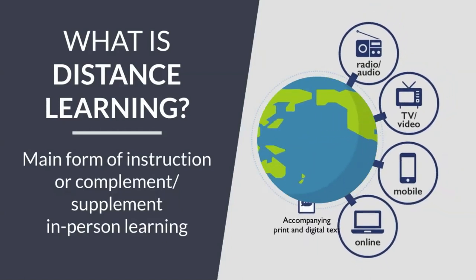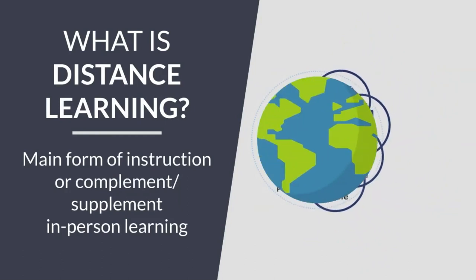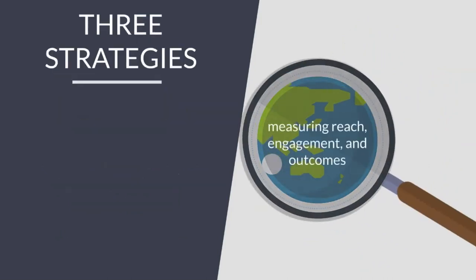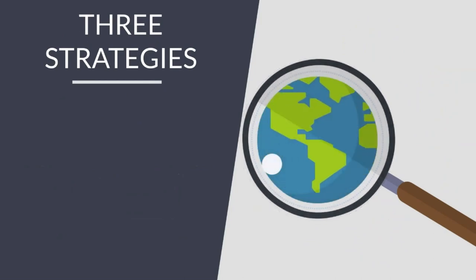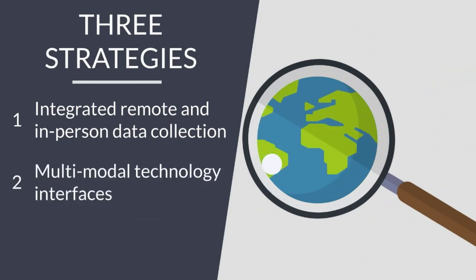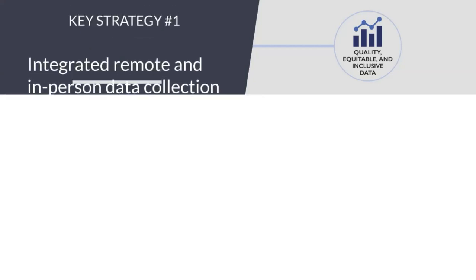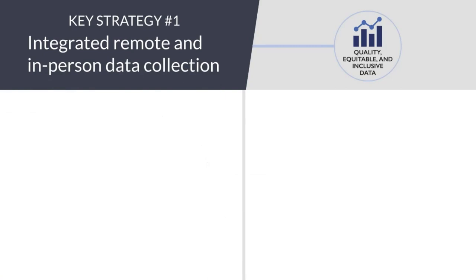As countries and education agencies take up distance learning, it is important to design and implement evidence-based and intentional strategies for monitoring and evaluation. This video outlines three interconnected strategies for measuring reach, engagement, and outcomes: integrated remote and in-person data collection, multimodal technology interfaces, and mixed methods data collection. Using a combination of these strategies will help ensure quality, equitable, and inclusive data. Key strategy number one is integrated remote and in-person data collection.